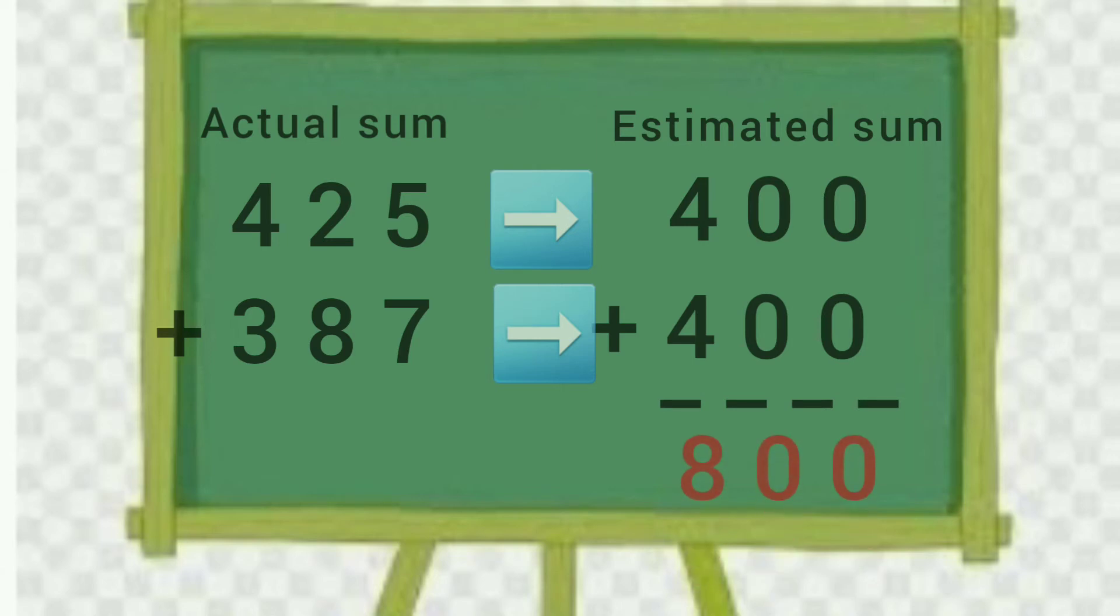Now let us find the actual sum of 425 and 387, which is 812. So we can see that the actual sum and the estimated sum is approximately equal.